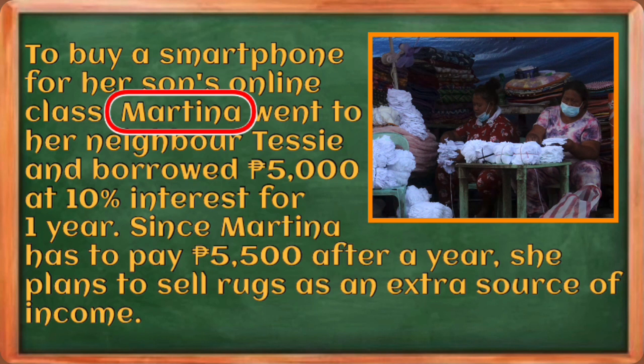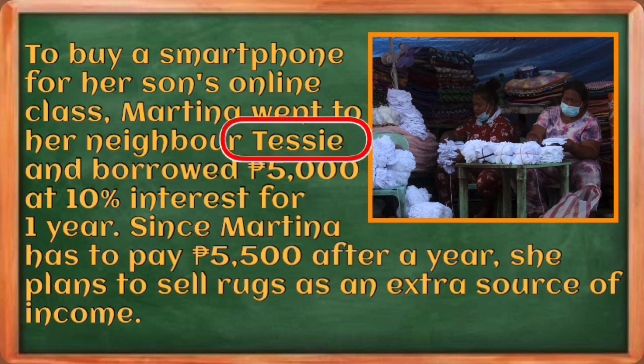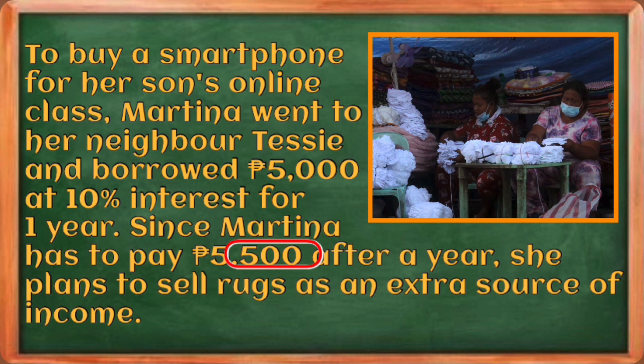In this case it's a person, so Tessie here is called the lender. The interest is the payment for the use of the borrowed money. Since Martina borrowed five thousand pesos from Tessie and paid five thousand five hundred pesos, the interest in this case is five hundred pesos — you can get it by subtracting five thousand five hundred with five thousand.